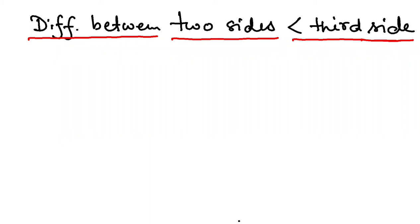Hello students, we are learning the properties of triangles. This time I am going to discuss a property that the difference between any two sides of a triangle must be less than the third side.